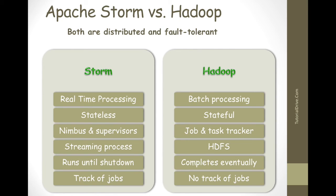Fault-tolerant means the system uses master and slave architecture. When the master goes down, the slave will act as master — that is fault-tolerant mode.